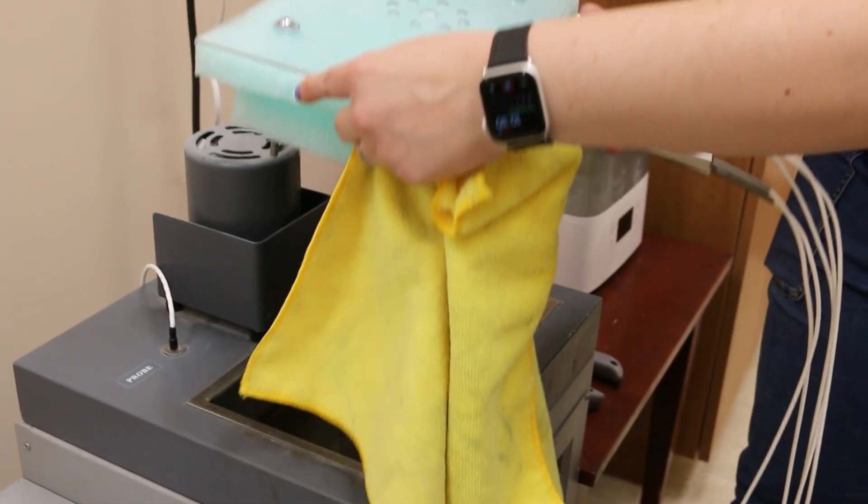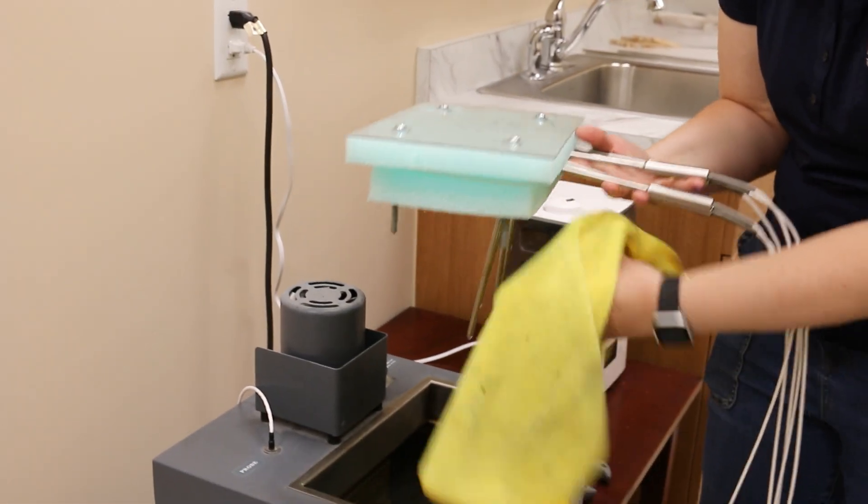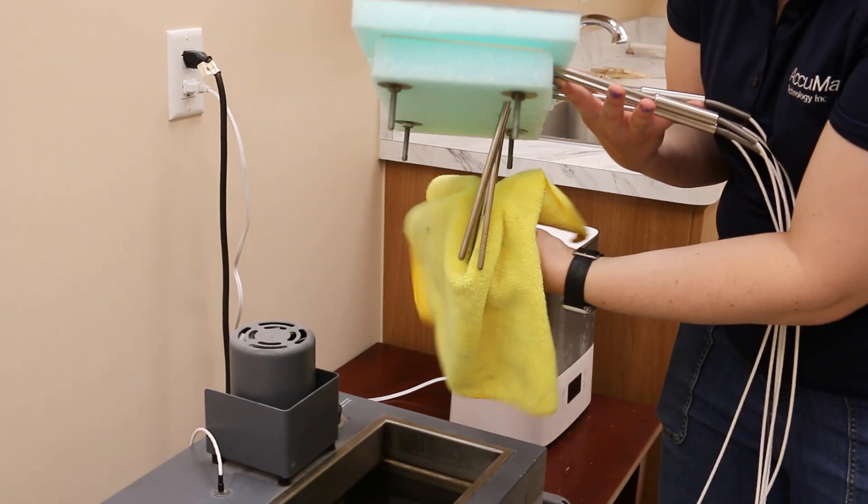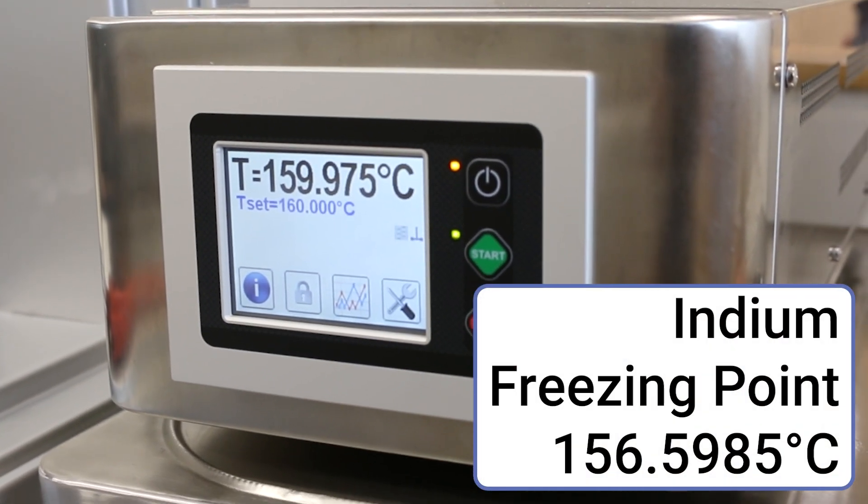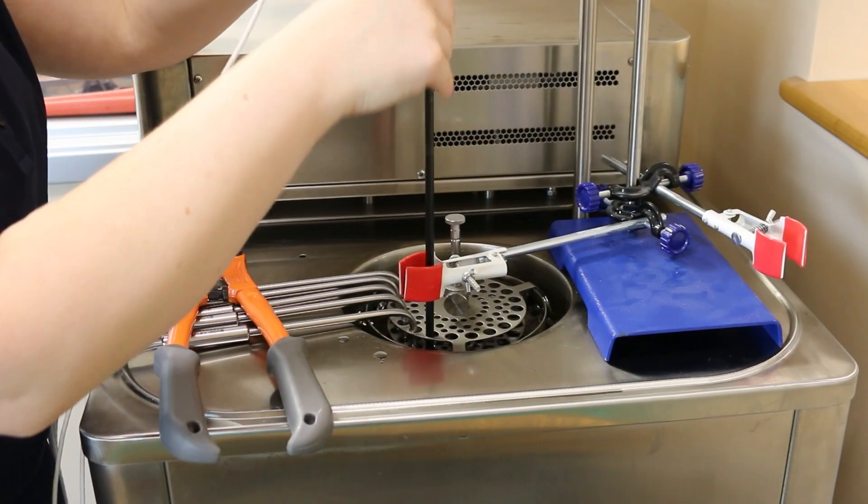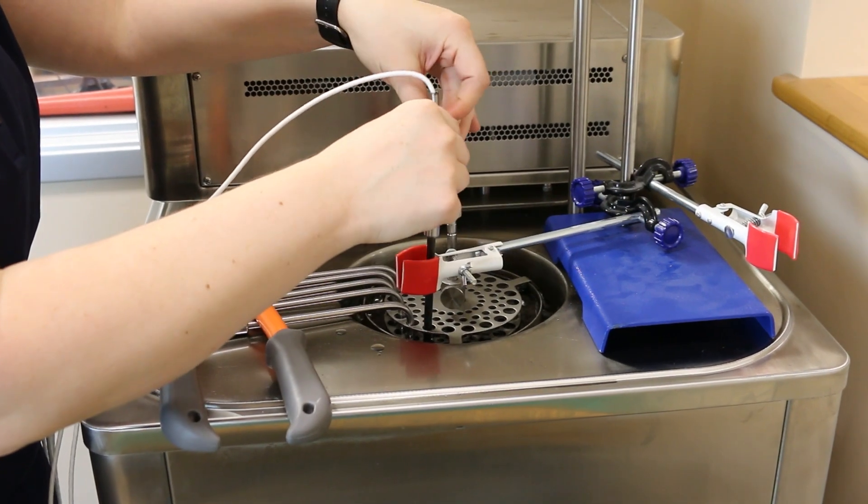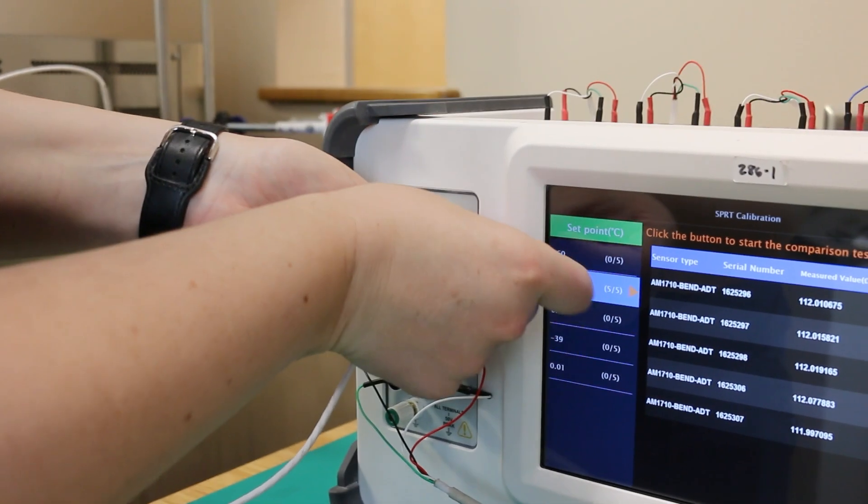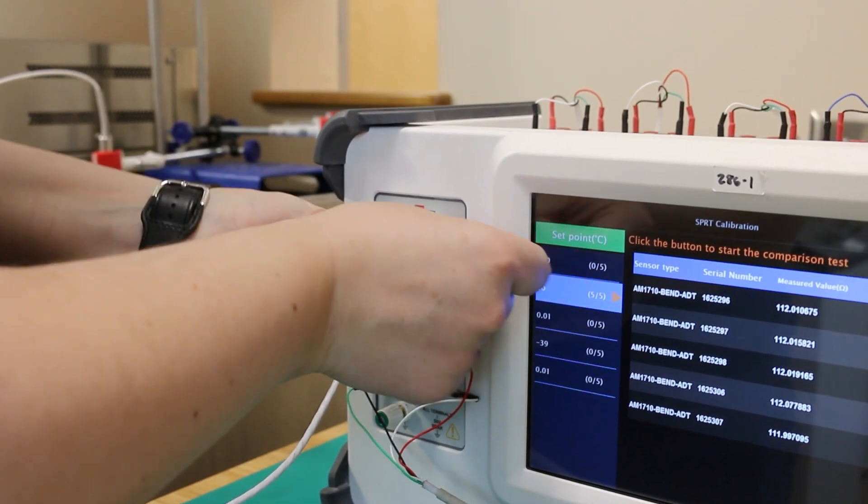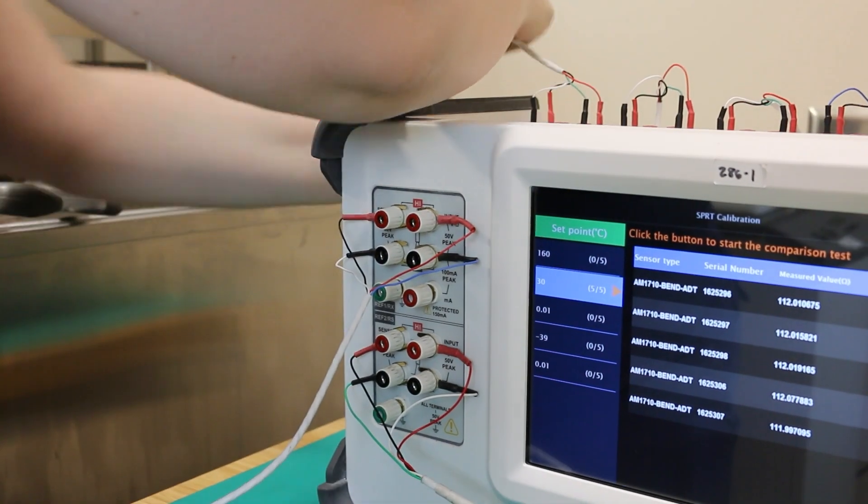Once the test is finished, remove and dry off the probes before proceeding to the next calibration point, which will be set to 160 degrees Celsius as a comparison against the freezing point of Indium. Insert the DUT probes and reference probe into the bath, and connect them to the 286 in the same way as previous calibration point, with the five DUTs connected to the top ports, and the reference connected to REF1.